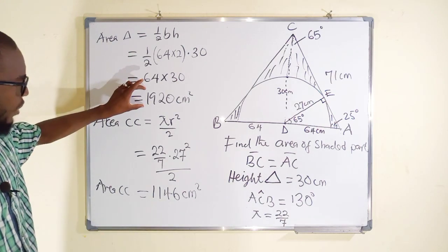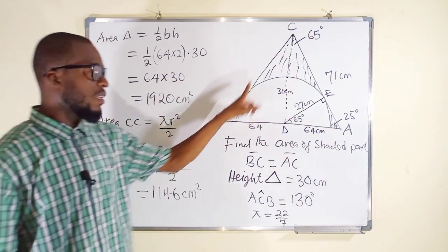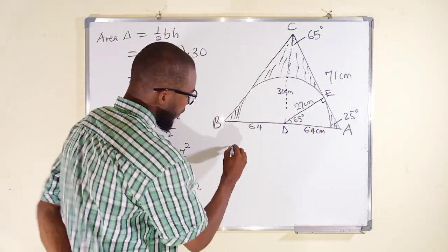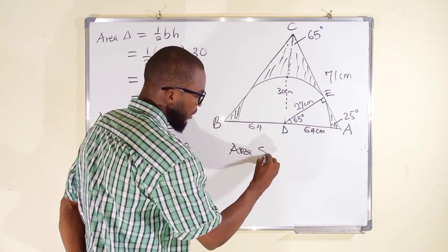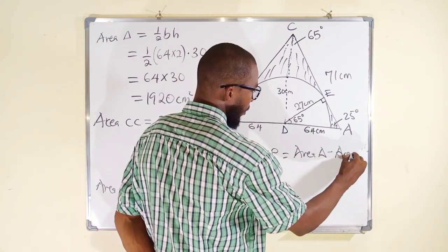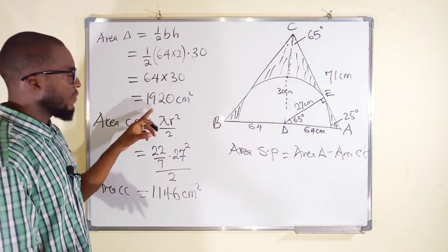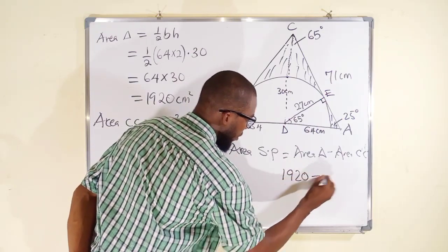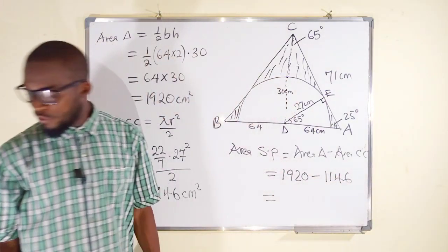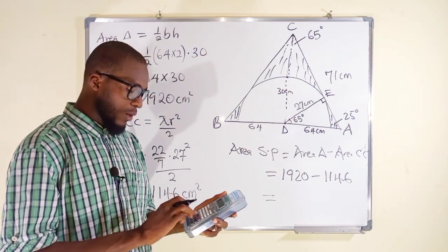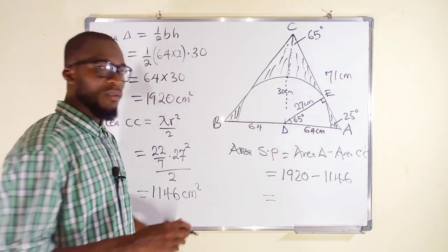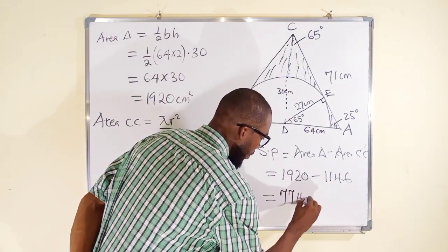This is the area of semicircle. This is the area of triangle. So now we are going to subtract this from this to get the area of the shaded part. Area of the shaded part is equal to area of triangle minus area of semicircle. Area of triangle is giving us 1,920 minus 1,146. This is equal to - we have 1,920 minus 1,146 - we have 774 cm squared.